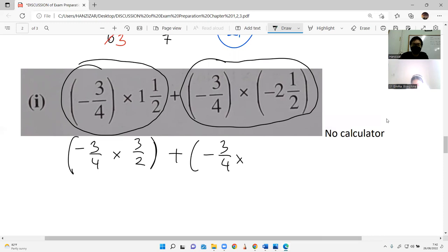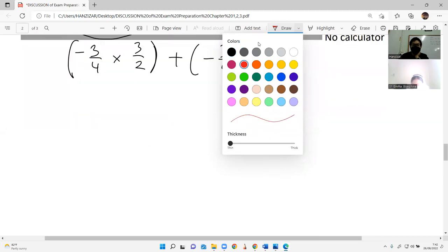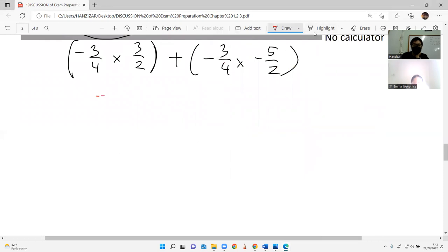Plus negative 3 over 4 times what? 5 plus 2, negative 5. Negative 5 over 2. Change everything into improper fraction, that's important. Next: negative 9 over 8. When you multiply, it's easy, you don't have to make the denominator equal. Just times times. Plus negative times negative is positive: 15 over 8. The denominator is already the same, so just negative 9 plus 15 is 6. Simplify: 3 over 4.